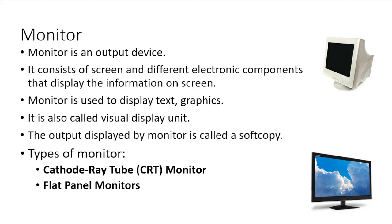First of all we will discuss about monitor. Monitor is the most commonly used output device. It consists of a screen and different electronic components that display the information on the screen. Monitors are used to display text, graphics and video in different colors. It is also called a visual display unit. The output displayed on a monitor is called soft copy.